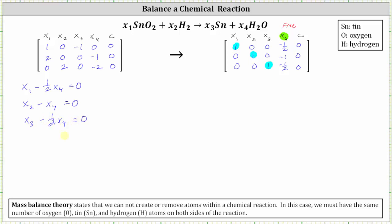Because x sub four is the free variable, we will now express x sub one, x sub two, and x sub three in terms of x sub four. In the first equation, we add one half x sub four to both sides, which gives us x sub one equals one half x sub four. In the second equation, we add x sub four to both sides, giving us x sub two equals x sub four. In the third equation, we add one half x sub four to both sides, giving us x sub three equals one half x sub four. Since x sub four is free, it can be any value.